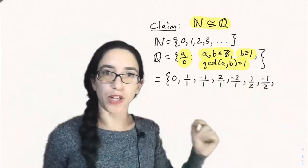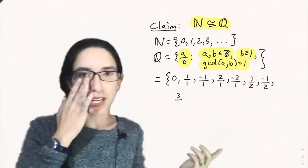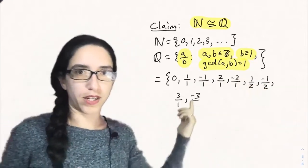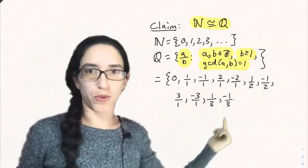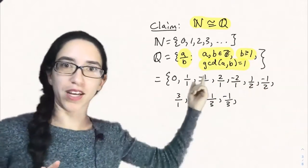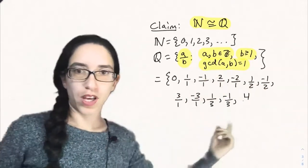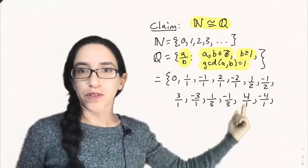OK, that's all the possibilities where a plus b is 3. What about if a plus b is 4? Well, we can have 3 over 1 and minus 3 over 1. You know, we're just negating. 1 over 3 and minus 1 over 3. We can't have 2 over 2 because that's not reduced. That's the same as 1 over 1. We're going to skip that because of the GCD condition. We don't want to list an element twice after all. For sum equal to 5,